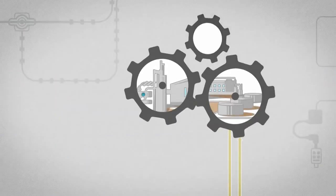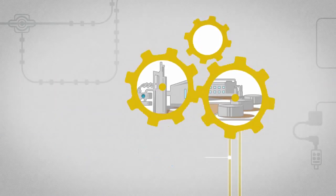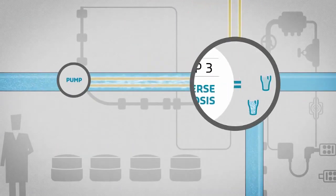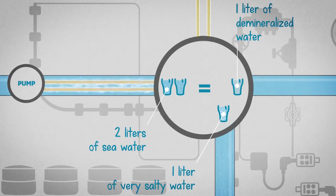The energy produced by this process is partly recovered and reused to operate the plant. For every two liters of salt water pumped, we obtain one liter of pure and demineralized water. The other liter of water, called brine, is twice as salty.